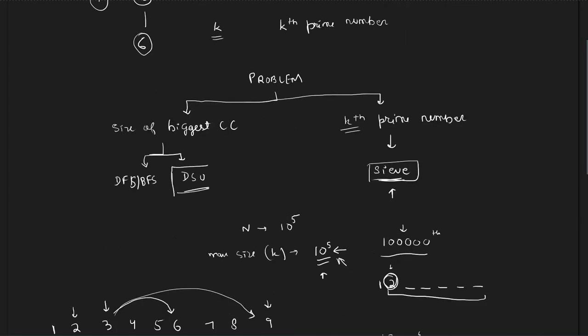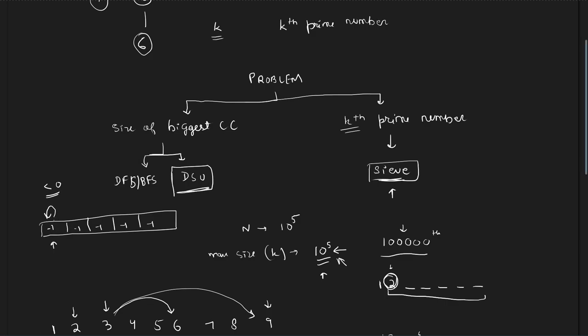For the connected components part we use a Disjoint Set Union. Initially all values are -1, denoting each node is its own parent and the component size is 1. If the value at an index is negative, that index is a root/parent and the absolute value gives the component size. If the value is non-negative (including zero), it points to the parent of that node.